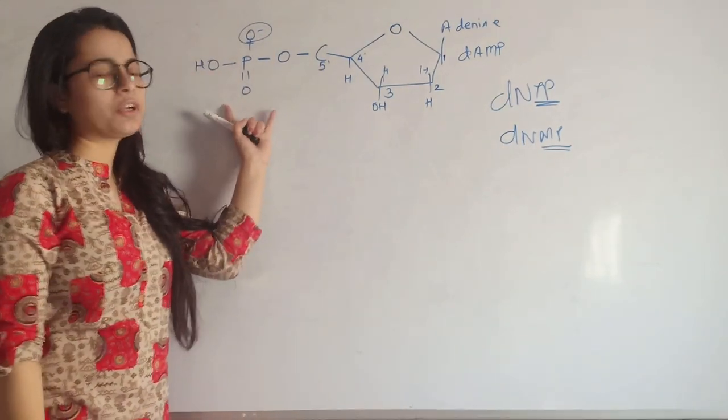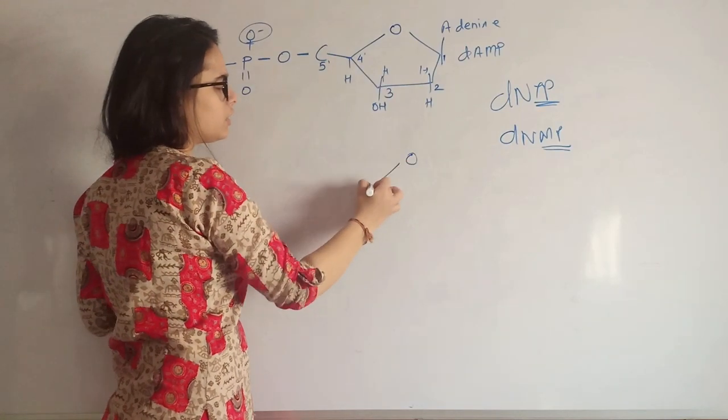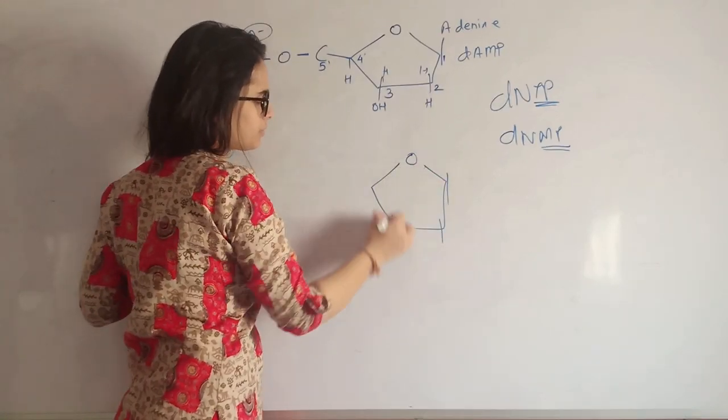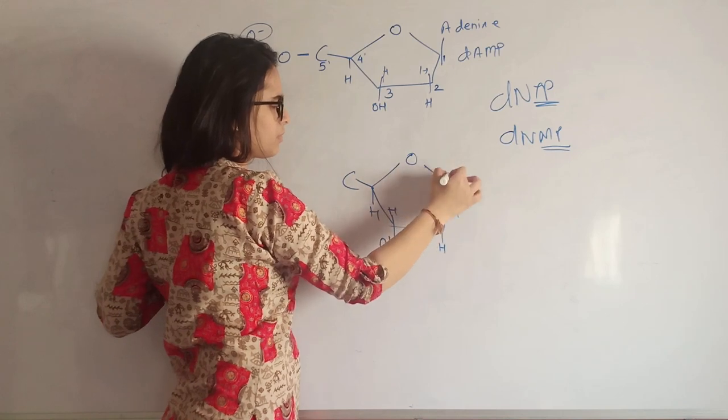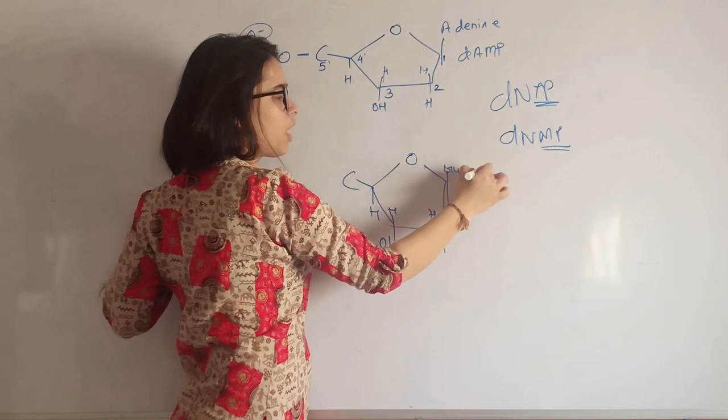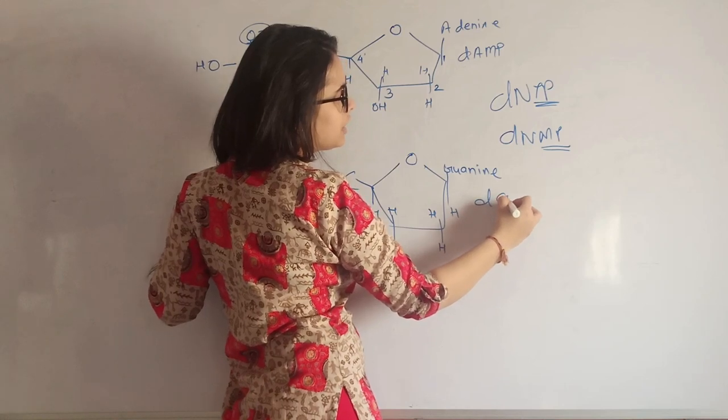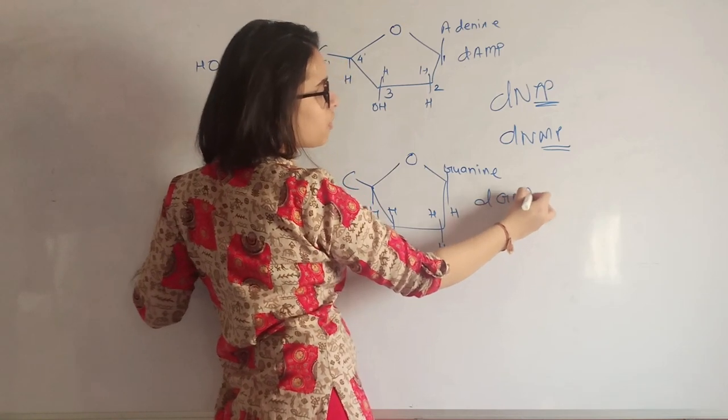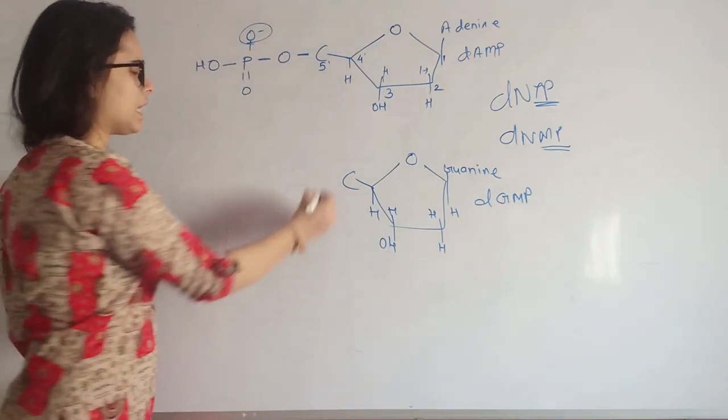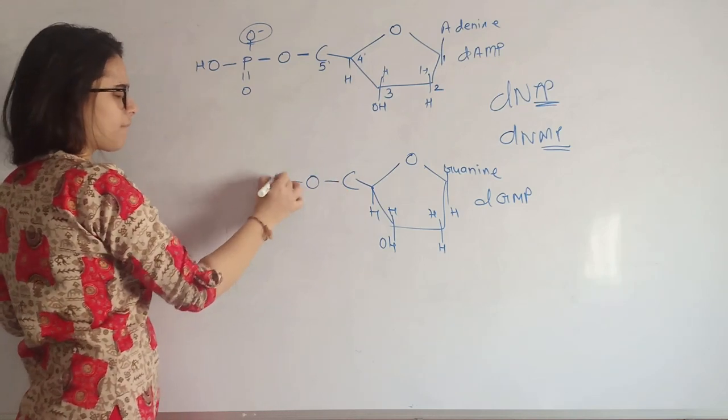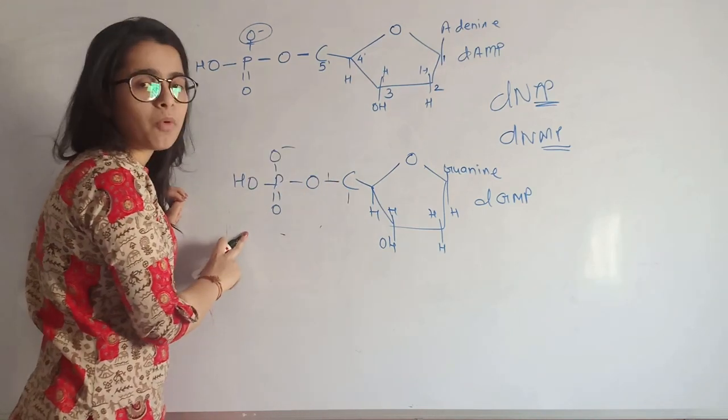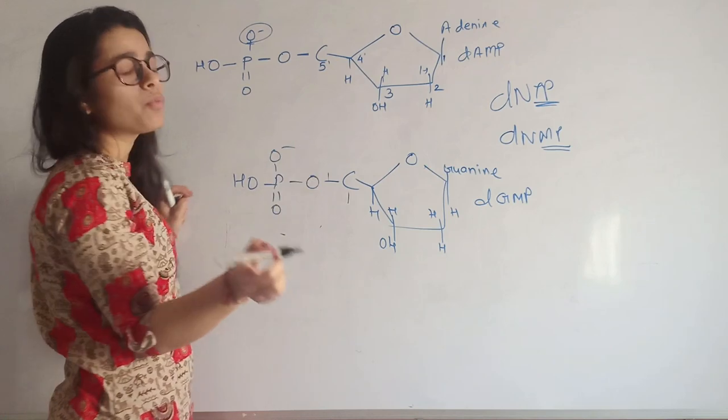This is a monophosphate group. We are drawing another nucleotide, suppose it is guanine, so it would be named as deoxyguanine monophosphate, or dGMP.